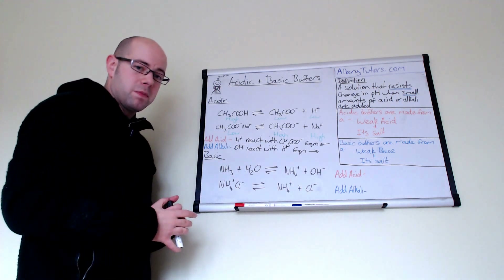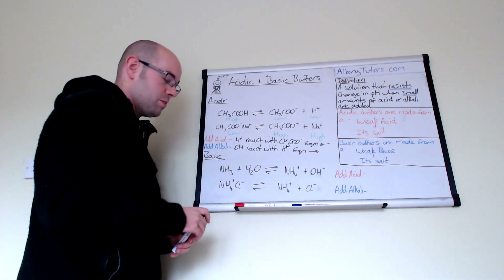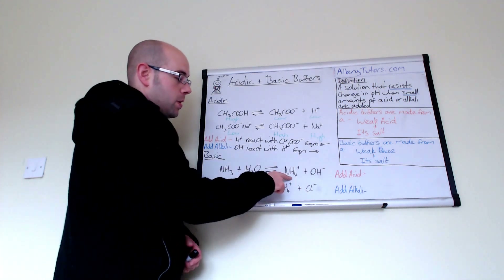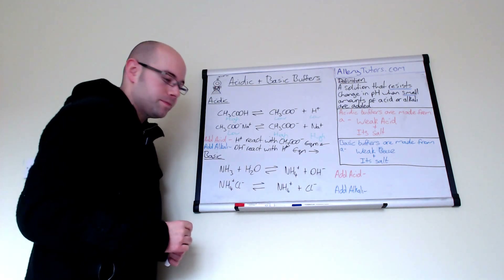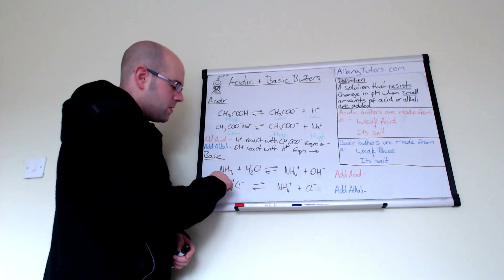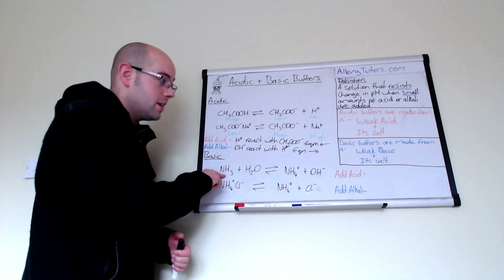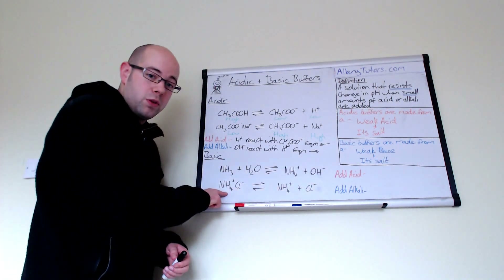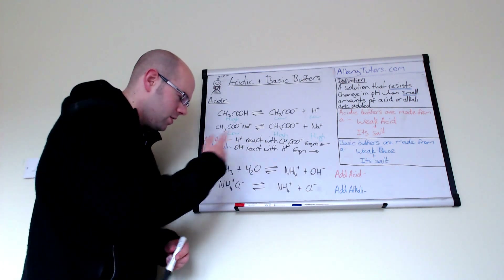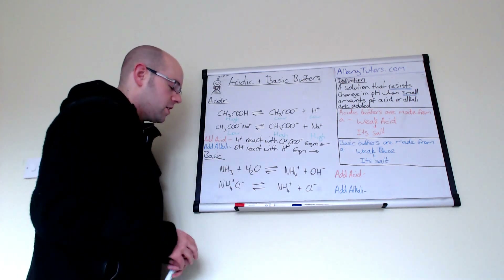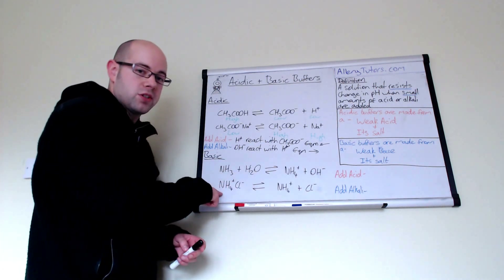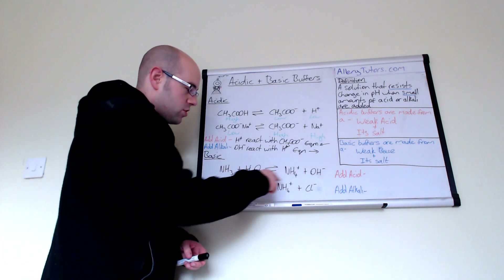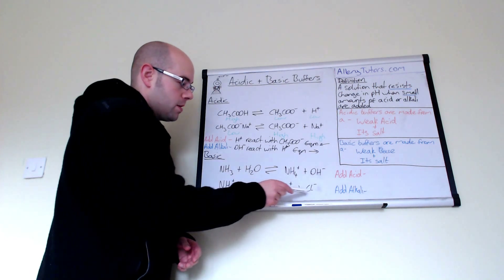It's really similar for a basic buffer as well. For a basic buffer we've got ammonia and water, and these two react together to form ammonium ions and hydroxide ions. This is your weak base. We need its salt, and the salt would be ammonium chloride — it could be ammonium bromide, ammonium iodide, anything like that — but ammonium chloride is the most common salt you can make from ammonia. And again, ammonium chloride dissociates fully into ammonium and chloride ions.